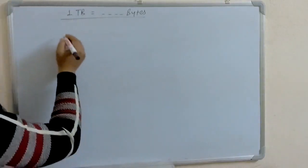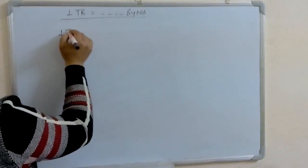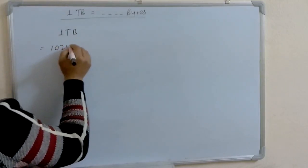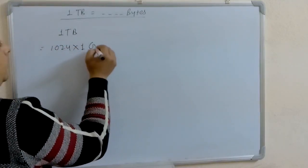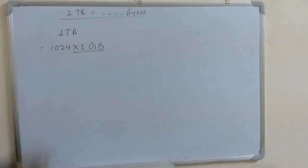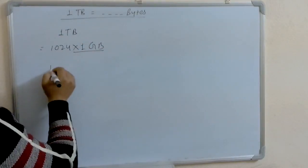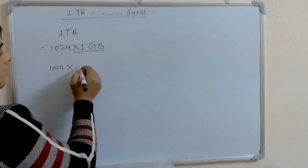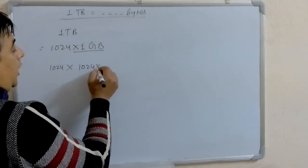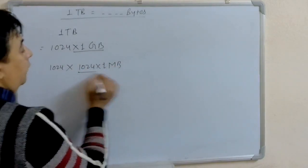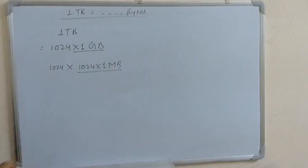Now we start. 1 terabyte is equal to 1024 GB, and 1024 GB is equal to 1 TB. Leave this 1024 as it is and break down 1 GB — 1024 MB is equal to 1 GB.